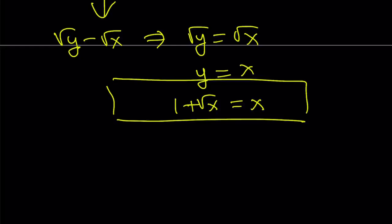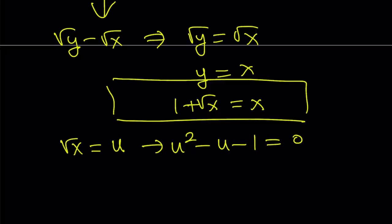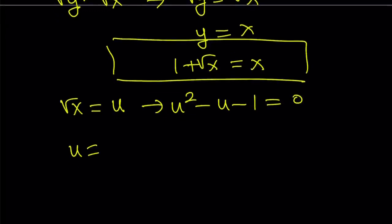Since I love substitution, I'm going to use that. Suppose square root of x equals u. From here, we get u squared minus u minus 1 equals 0. And as you know, the solutions to this equation are given by 1 plus or minus square root of 5, divided by 2. This is where we get the golden flavor.